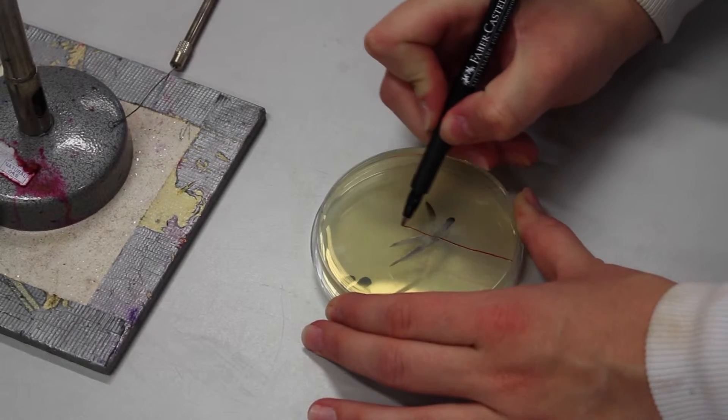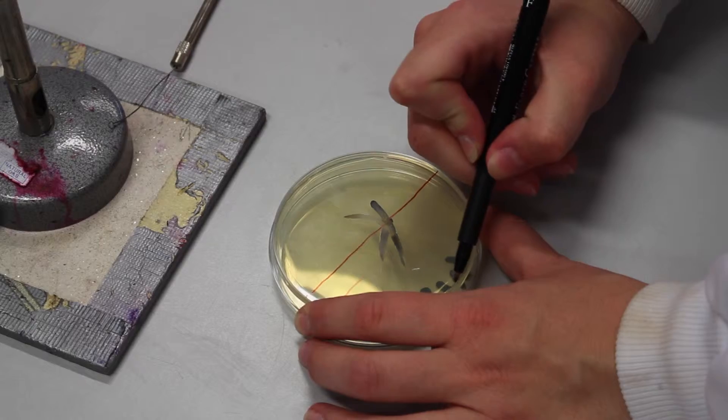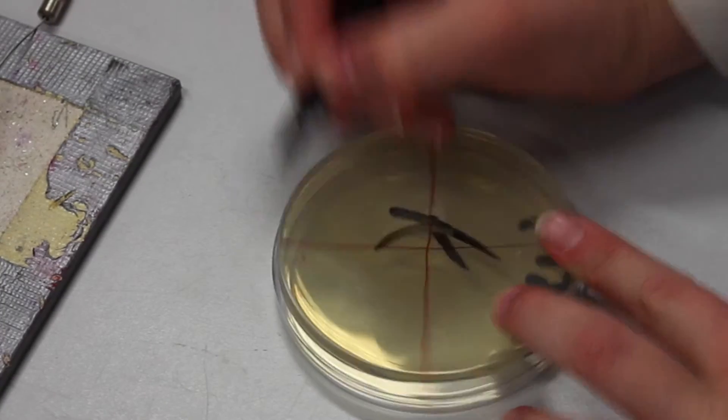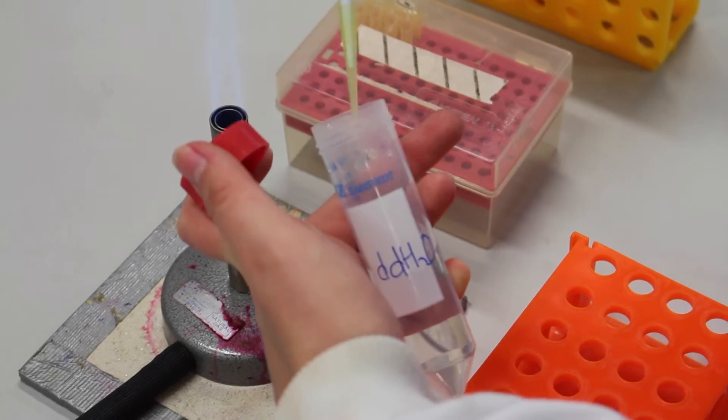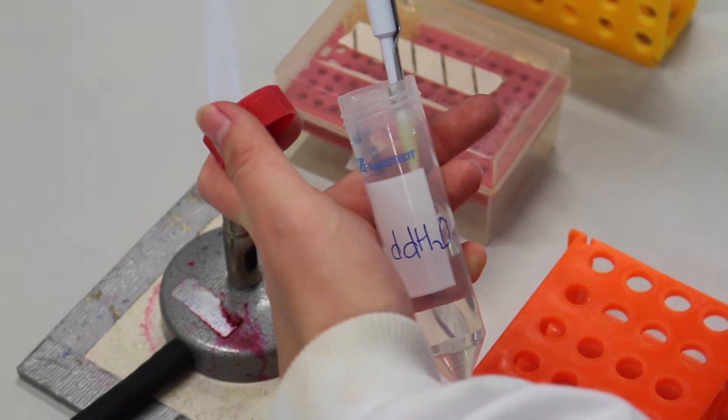Divide an agar plate into four labelled quadrants by marking the back of the plate. Add 20 microliters of distilled water to an eppendorf tube.